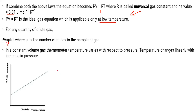At constant volume, the gas thermometer temperature varies with respect to pressure — temperature changes linearly with increase in pressure. This means if temperature is increased, the pressure is also increased.